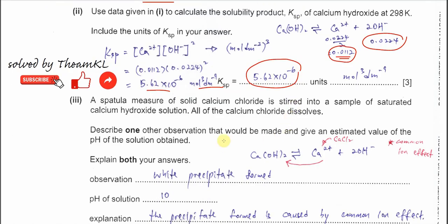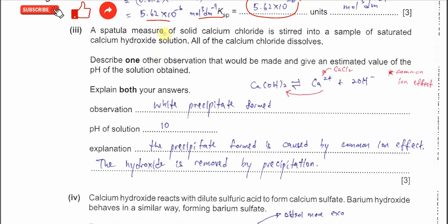Part three: a spatula measure of solid calcium chloride is stirred into a sample of saturated calcium hydroxide. This is the common ion effect — calcium chloride is soluble, so adding it increases the concentration of calcium ions. When [Ca²⁺] increases, the equilibrium shifts to the left, forming more precipitate, and the hydroxide concentration decreases as it is consumed in forming precipitate.